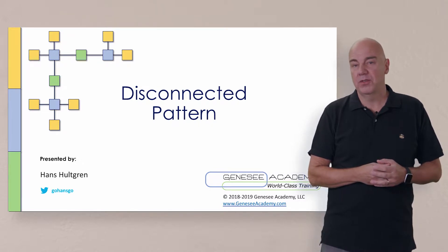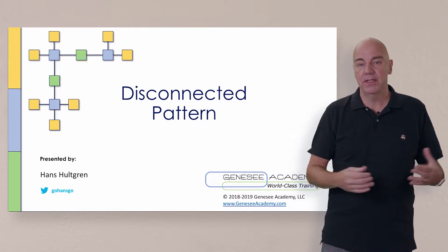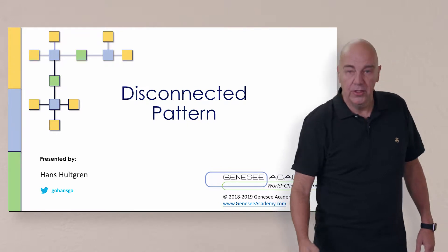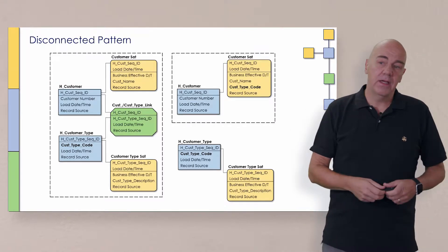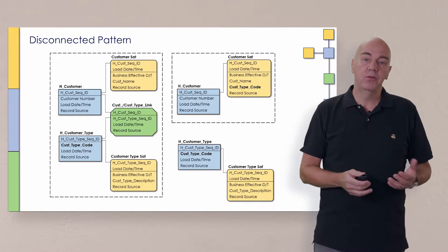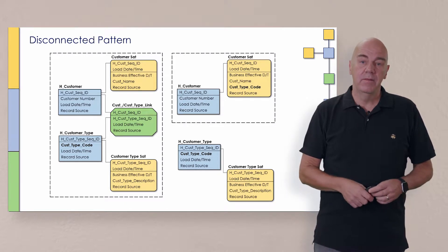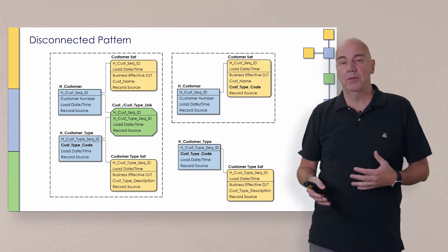But again, for our purposes today, we'll refer to this as the disconnected pattern. Let's take a quick look. Oftentimes, you're going to find with ensemble modeling that you're going to have linked relationships between hubs.